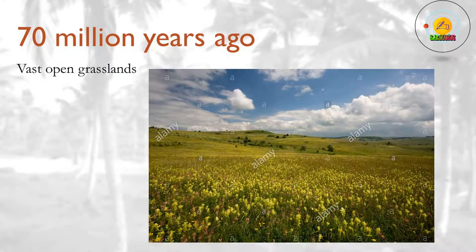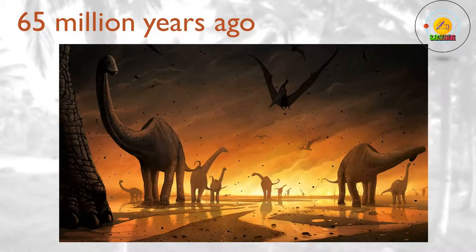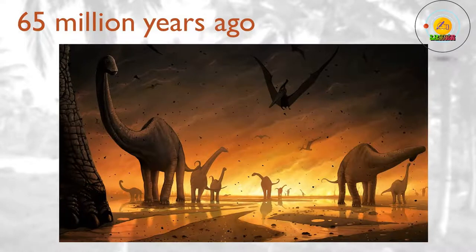70 million years ago. Grasses evolve, though it will be several million years before the vast open grasslands appear. 65 million years ago. The Cretaceous-Tertiary (K-T) extinction wipes out a swath of species, including all the giant reptiles — the dinosaurs, pterosaurs, ichthyosaurs and plesiosaurs. The ammonites are also wiped out. The extinction clears the way for the mammals, which go on to dominate the planet.